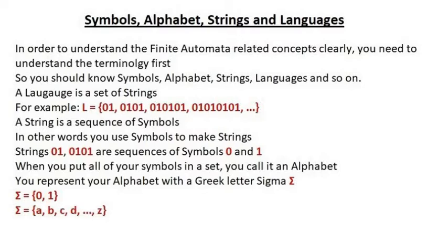Similarly, we can have another alphabet of all the letters of the English language. We can use the symbols of this alphabet to make the words of the English language — or in our terminology, make the strings of the English language. So, for example, our language L has strings: a, at, that, cat, hat, what, and so on.